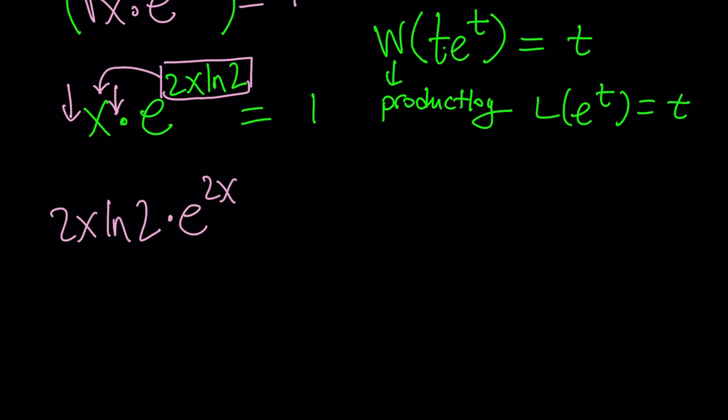And then e to the power of 2x ln two. And of course, we multiply both sides by what? 2 ln two. Awesome.